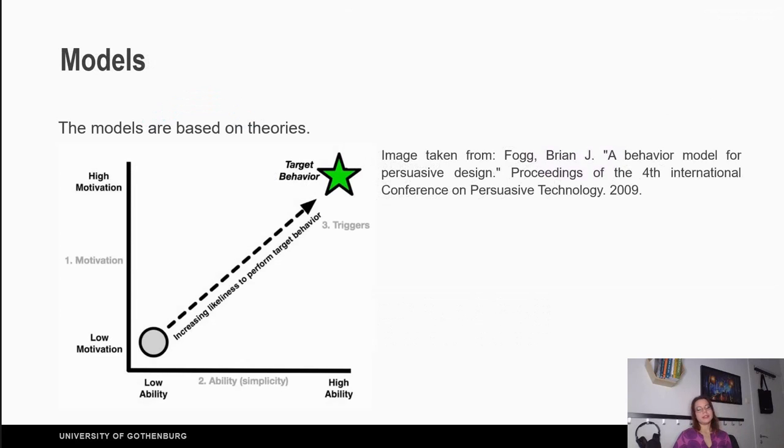Models. The models are based on theories. Here is an example of a diagram, which is a model from Fogg, a behavior model for persuasive design, where supports that high motivation and high ability of the person in combination with triggers in the proper time can lead to the new behavior that the person wants to succeed to do. So this is a model that is based on many behavioral change theories.